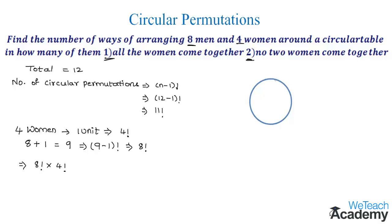First we arrange eight men around a circular table. We arrange these eight men in a circular table in eight minus one factorial, which would be seven factorial. There are eight places in between them, and the places are represented by the symbol x.